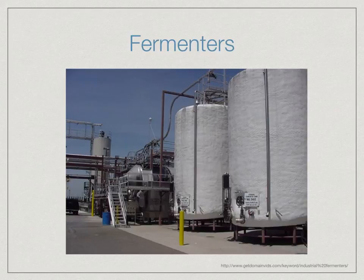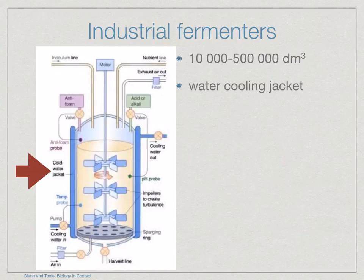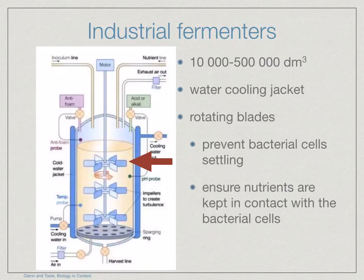Let's have a look at the features of a fermenter. A fermenter is a large stainless steel vessel with a capacity between 10,000 to 500,000 cubic decimetres. It has a water jacket with circulating water to control its temperature, and a series of ports that allow materials to be added or extracted at suitable stages of the process. It also has a series of flat blades that can be rotated, ensuring the contents are constantly mixed to keep the bacterial cells from settling out at the bottom and to keep nutrients in contact with the bacterial cells.